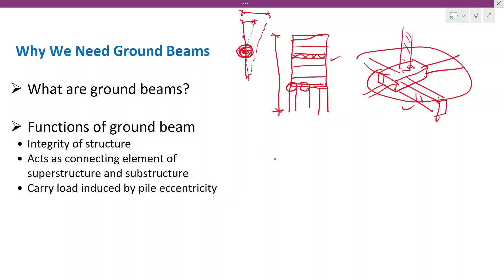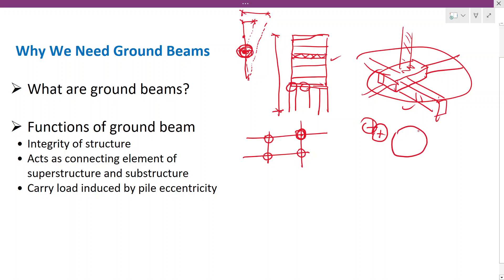Another important consideration relates to construction of high-rise buildings with piles. During construction, we might not be able to construct the pile at the exact location. For example, a pile center may shift from its intended position. There is an allowance for this deviation, and the pile has to be constructed within this limit.